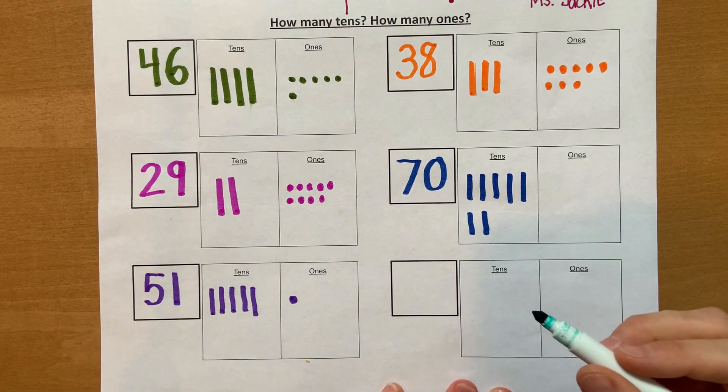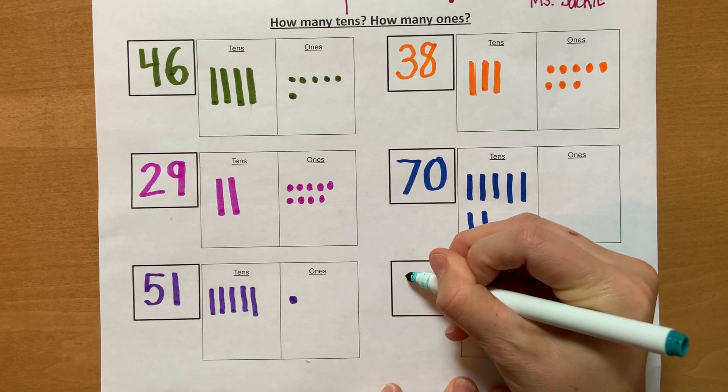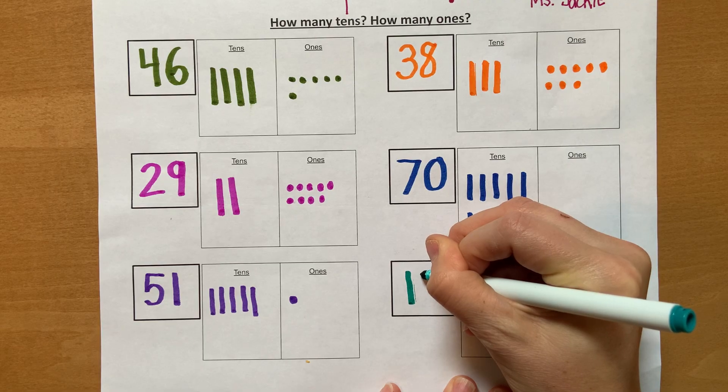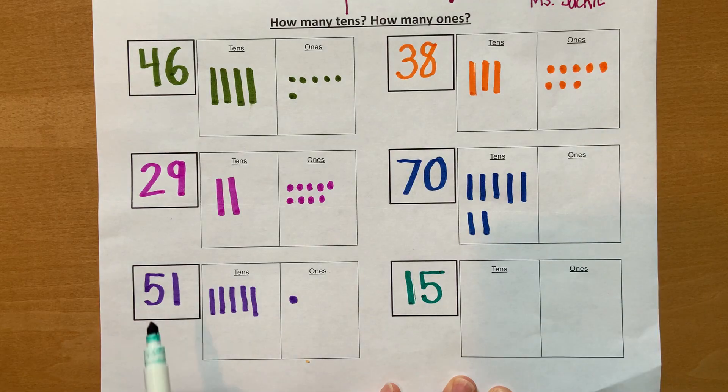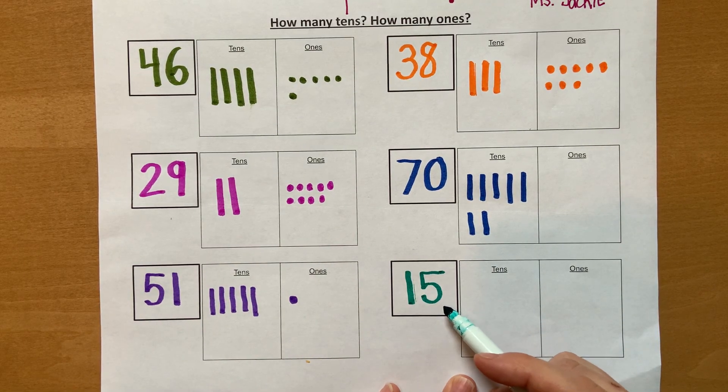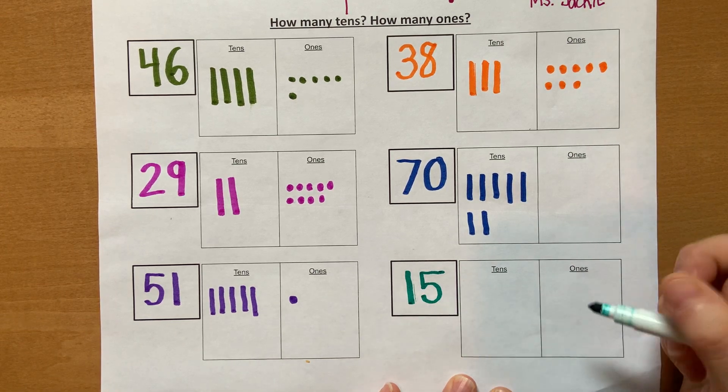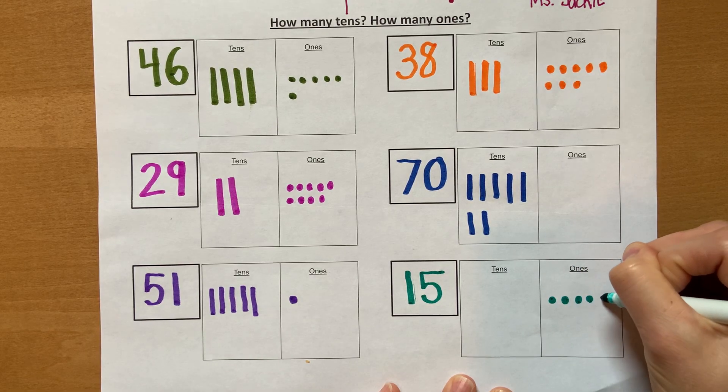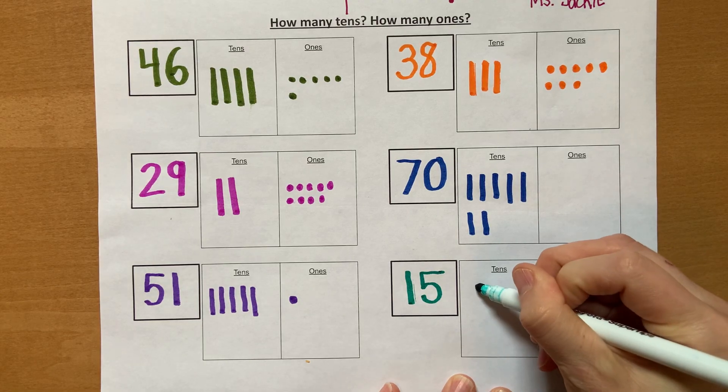Okay, last one. I'm going to do the number 15. Okay, I hear that teen. That means there's a 10. Okay, 15. I'm going to do that 5 again, right? I go down and around and put it up top. Look, this is 51 and this is 15. Very different. Okay, so I'll start with my 1s. How many 1s do I have? 5: 1, 2, 3, 4, 5 1s. And how many 10s? Just 1.